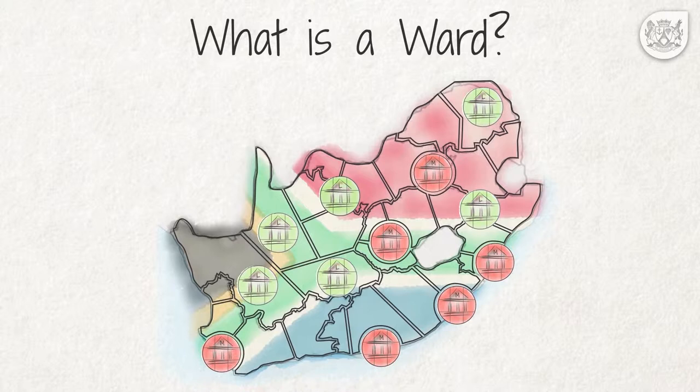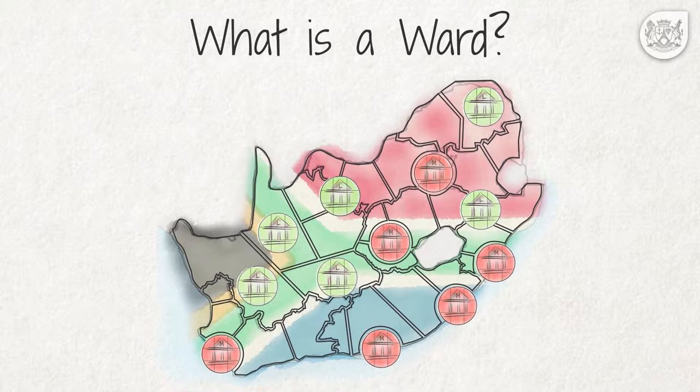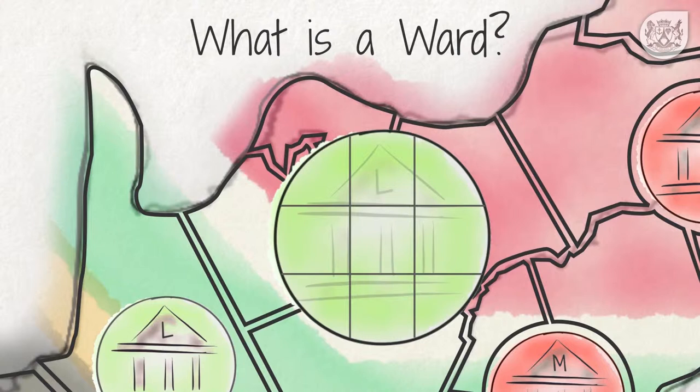What is a ward? A ward is an electoral area within a metropolitan or local municipality established by the Municipal Demarcation Board. All municipal wards have clearly defined boundaries and have approximately a similar number of registered voters living within these boundaries.